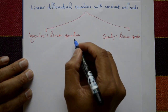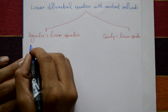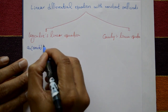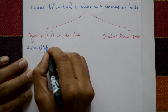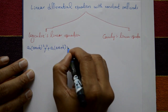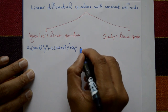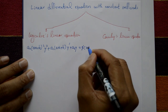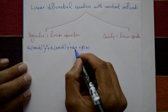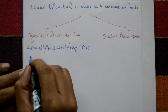First, Legendre's linear equation. The general form is: a-naught times (ax + b) squared times y-double-dash, plus a1 times (ax + b) times y-dash, plus a2 times y, is equal to phi of x. This is called Legendre's linear equation of second order.